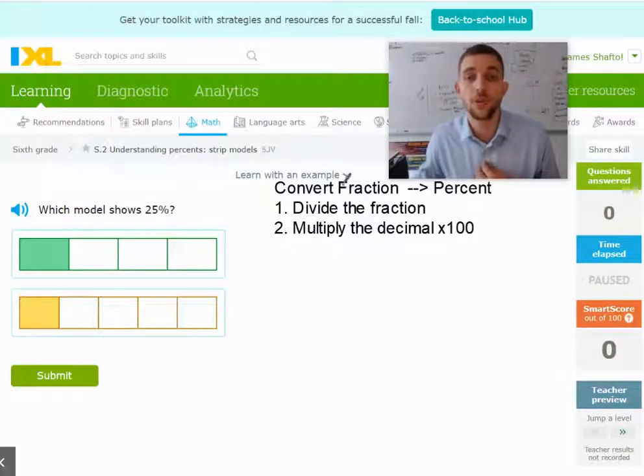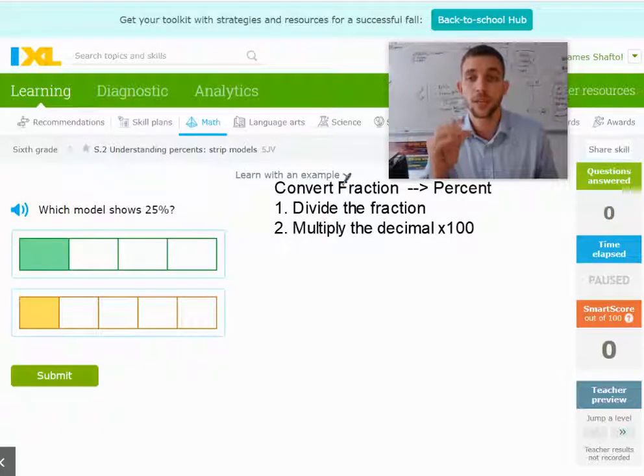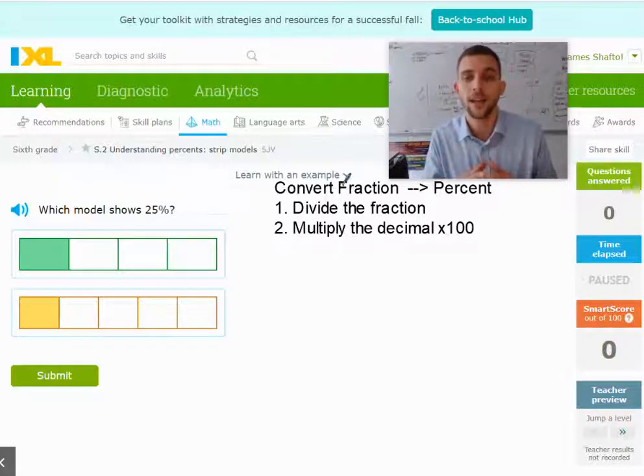If you'll look, the steps for doing this, converting from a fraction to a percent, is step one, divide the fraction. You take the numerator divided by the denominator, and then step two is to multiply the decimal that you get times 100.